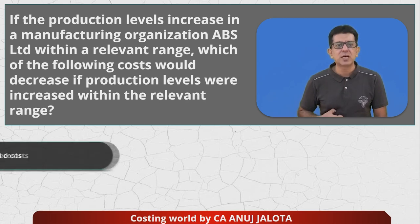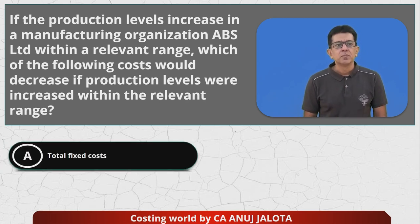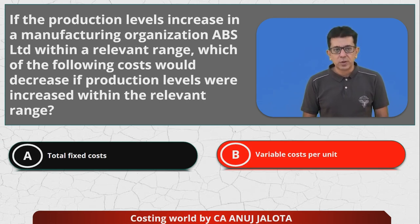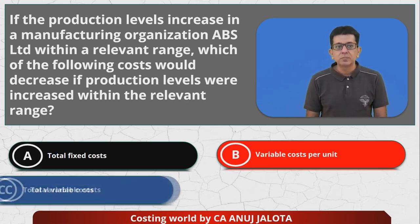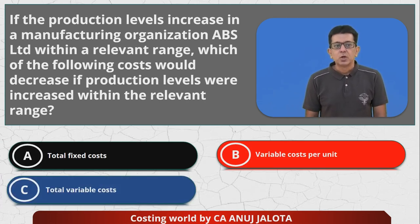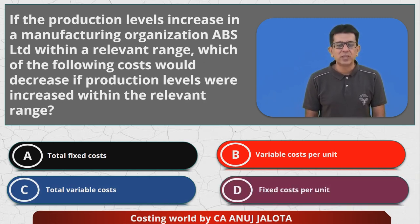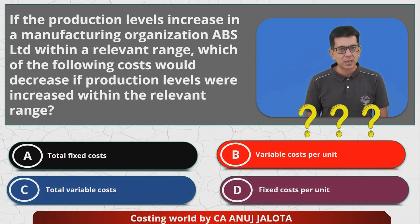Four options are: A — total fixed cost; B — variable cost per unit; C — total variable cost; and D — fixed cost per unit. Think of the correct answer. I think it is quite simple.